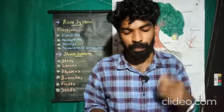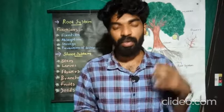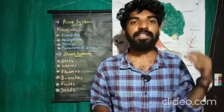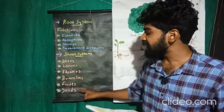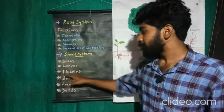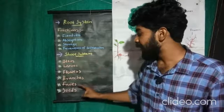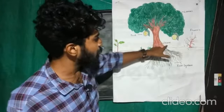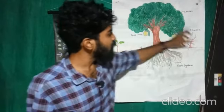Now we are going to look at the shoot system. The shoot system is the part of the plant growing above the ground. The shoot system consists of the stem, leaves, flowers, branches, fruits, and seeds.